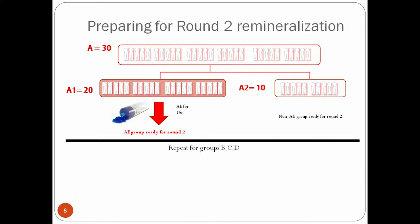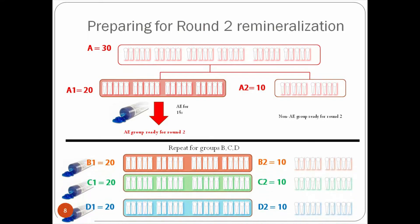And then after they have these two subgroups A1, A2, they repeated the same thing for groups B1, C1, D2, D1, for all the other groups, as you might expect.